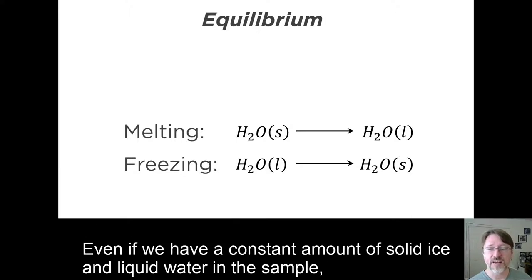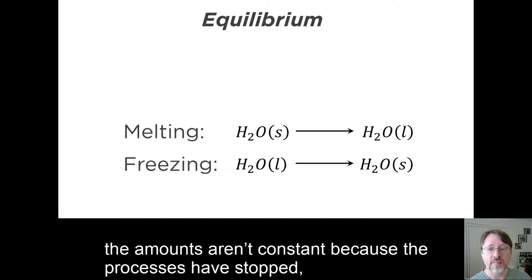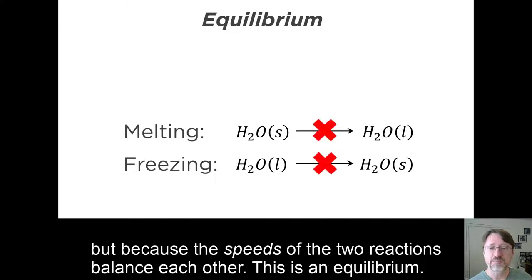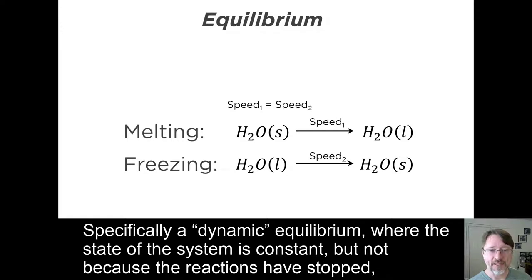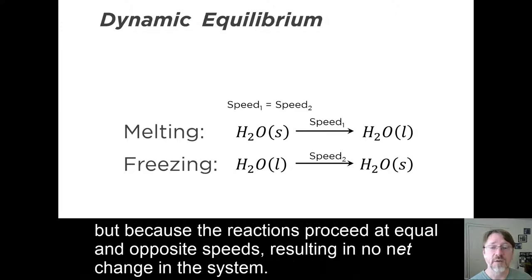Even if we have a constant amount of solid ice and liquid water in the sample, the amounts aren't constant because the processes have stopped, but because the speeds of the two reactions balance each other. This is an equilibrium, specifically a dynamic equilibrium, where the state of the system is constant, not because the reactions have stopped, but because the reactions proceed at equal and opposite speeds, resulting in no net change in the system.